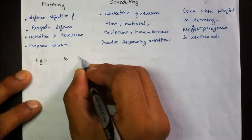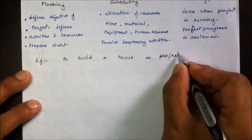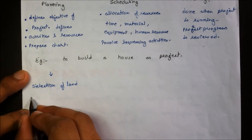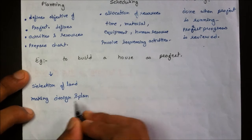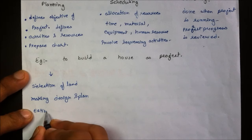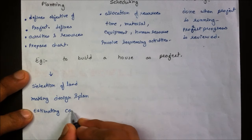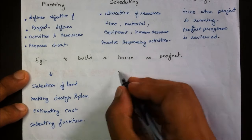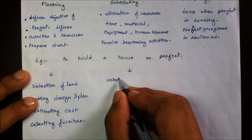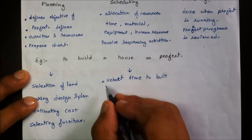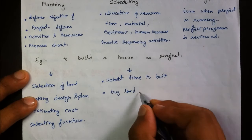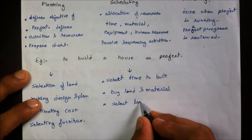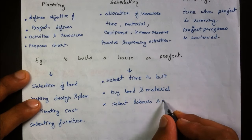For example, in a project of building a house: selection of land, making designs and plans, estimation and costing, and selecting furniture are part of planning. In scheduling, there is selection of the time or season to build the house, procurement of land and materials, and selection of laborers.